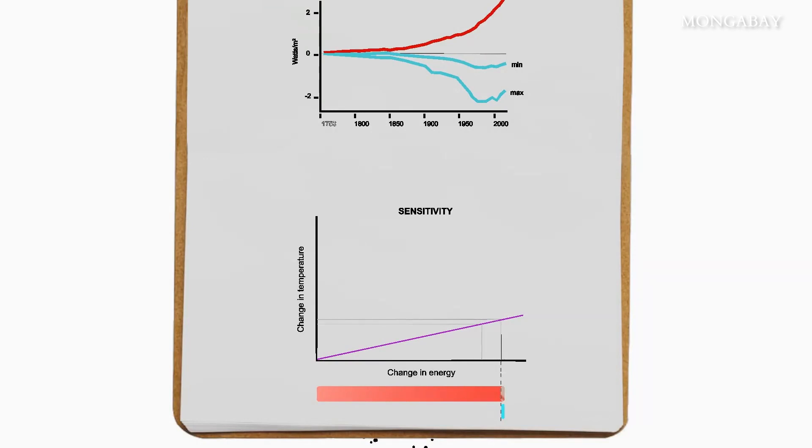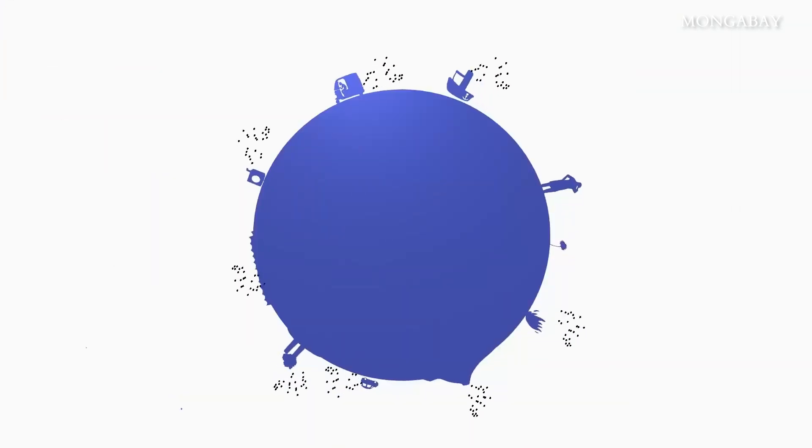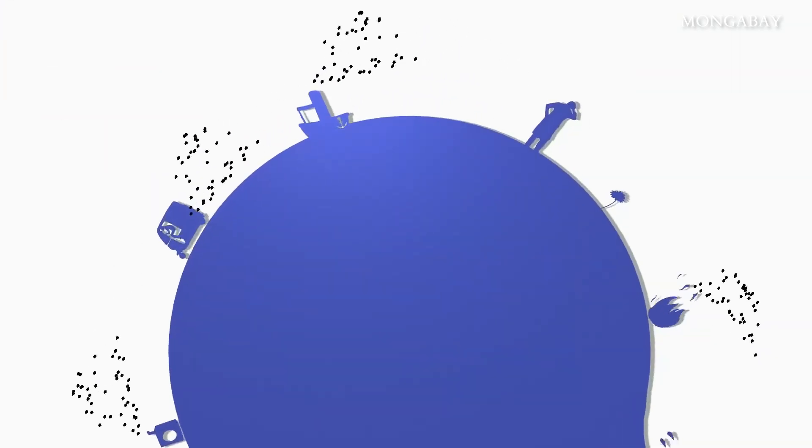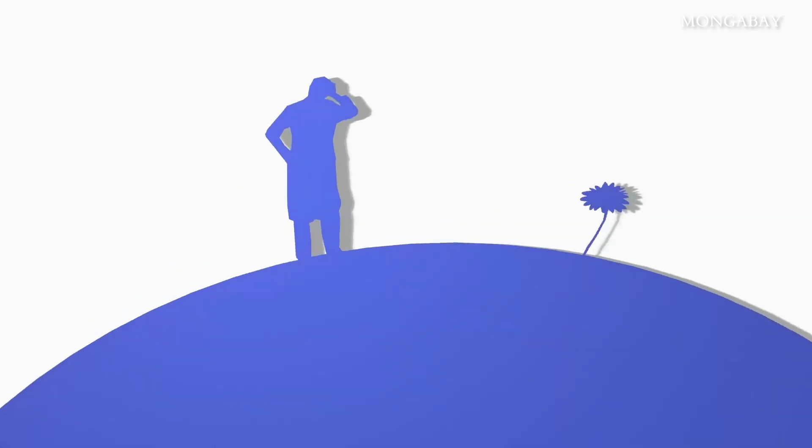But if aerosols are cooling a lot, then sensitivity must be high. That, he says, threatens us with a double whammy. If we manage to eliminate all aerosols, not only might earth's temperature go up, but it will go up faster due to earth's higher sensitivity, and that would be bad for life on our planet. More study is urgently needed to know what human actions are best.